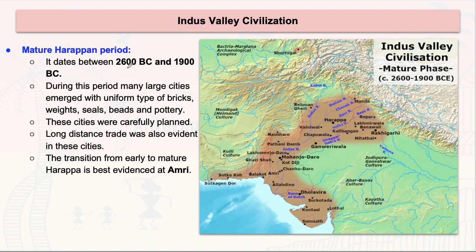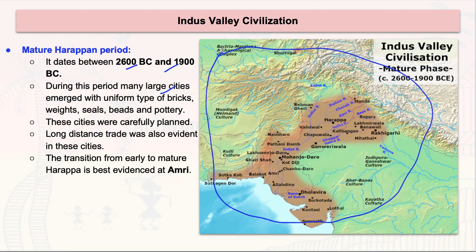The Mature Harappan period is from 2600–1900 BC. This is what you generally study in GS when you discuss Harappan civilization — without much discussion of pre, proto, or late phases. During this mature phase, large cities appeared with many advances in art, architecture, drainage systems, and granaries. Major cities include Harappa, Mohenjo-daro, Dholavira, and others — all part of the mature Harappan period.